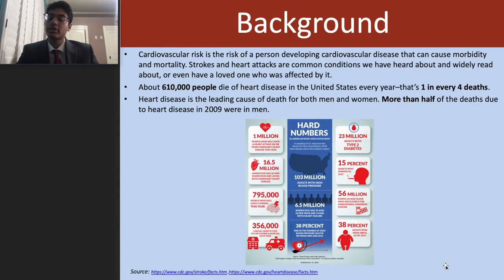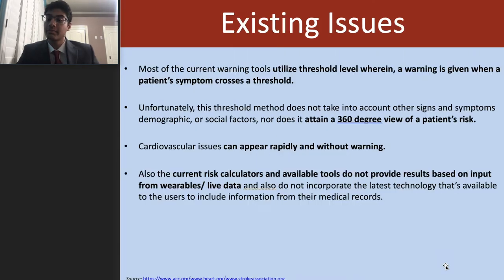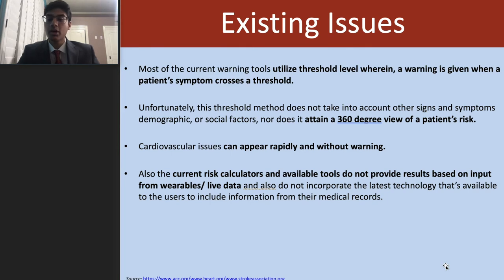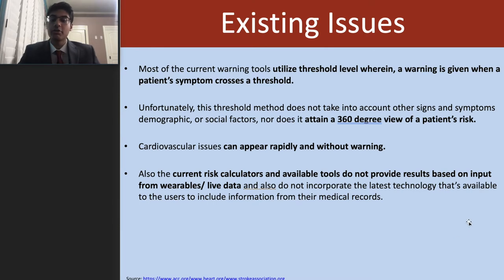Cardiovascular risk is the risk of a person developing cardiovascular disease, and heart disease is the leading cause of death for both men and women in the United States. Most current warning tools have a problem where they utilize threshold levels, giving a warning when a patient's symptoms cross a threshold. But this threshold method does not take into account other signs and symptoms, demographics, or social factors to get a holistic view of a patient's risk.